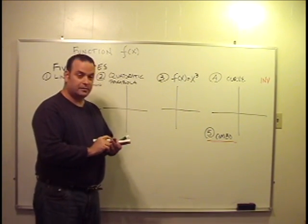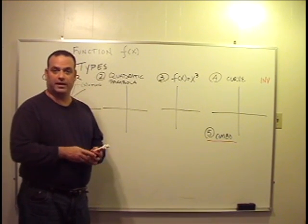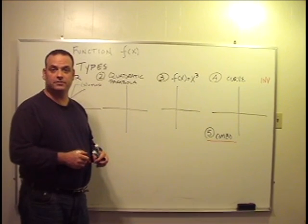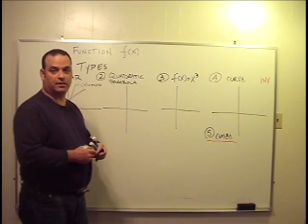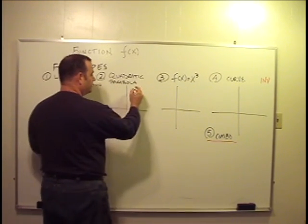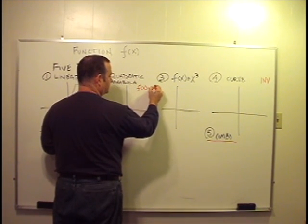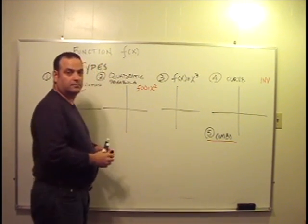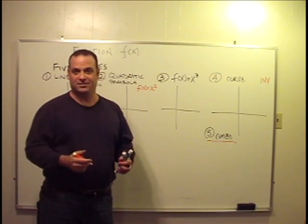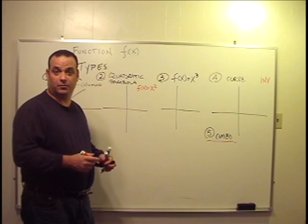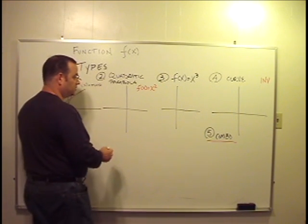The second type of graph on the SAT for a function is the quadratic function that graphs as a parabola where f of x is equal to x squared with some modifications of coefficients a, b, and c where ax squared plus bx plus c equals zero.